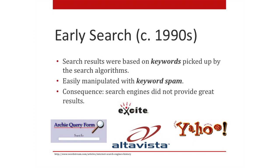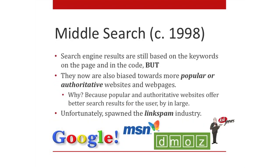Some early players included Yahoo with its original logo. Middle search started in 1998 when Google came about. Results were still based on keywords but now also biased towards more popular or authoritative websites, because those offer better answers to searchers. Unfortunately, a byproduct was the development of the link spam industry — just like keywords, you could manipulate links to rank number one. Google, MSN, DMOZ, and Ask Jeeves were some of the search engines that popped up around this time.